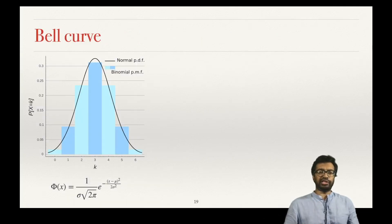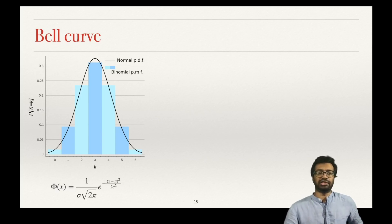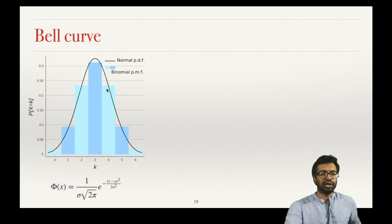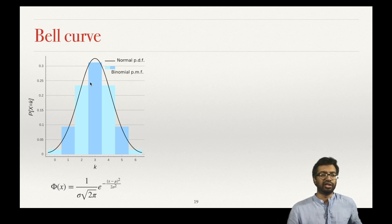You substitute x, mu and sigma into this formula and you get the probability of hitting 50 heads when you toss a fair coin 100 times. This distribution was called a bell curve during De Moivre's time because it looks like a bell. We have placed the binomial distribution here and on top of it the bell curve — you can see they are close to each other.